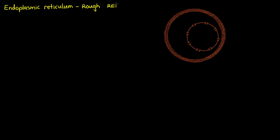So first off we have our eukaryotic cell here, which is particularly important when we're discussing rough endoplasmic reticulum because it's an organelle that is continuous with the outer membrane of our nucleus lipid bilayer.